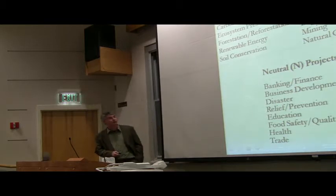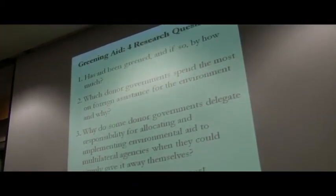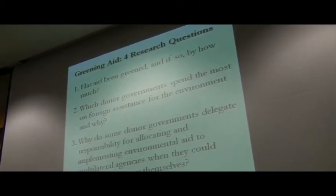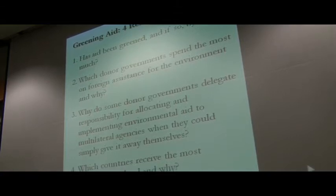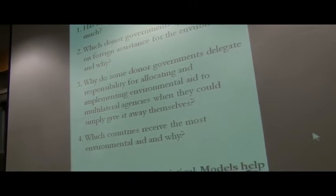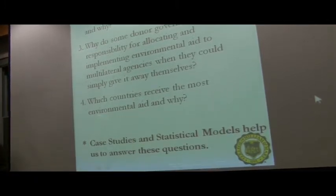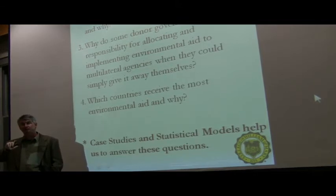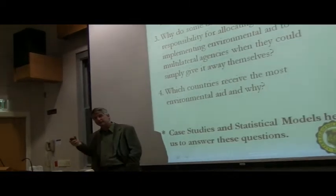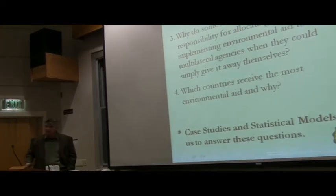We spent probably a year talking to biologists and ecologists and people who studied the impact of different types of projects to figure out what the coding scheme was — probably a 35-page single-space coding document. In the book we have four big research questions: Has aid been green, and if so by how much? Which donor governments spend the most on the environment and why? Why do some donors delegate to international organizations while others give bilaterally? And which countries receive the most environmental aid and why?